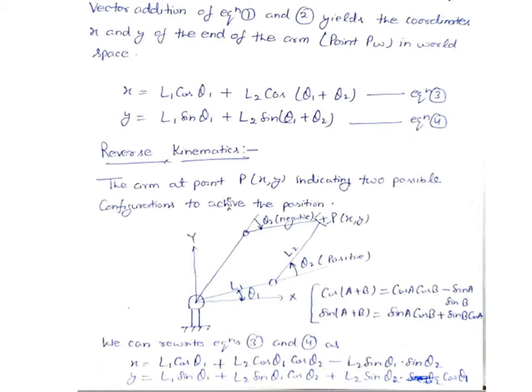You can find out the position of point P in world space x and y coordinates: x = L1 cos theta one + L2 cos(theta one + theta two) and y = L1 sin theta one + L2 sin(theta one + theta two). Equations three and four define the position of the end effector in world space. For the reverse kinematics case, the arm can indicate two possible configurations to achieve a given position.